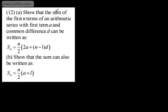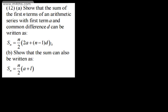So let's go ahead and start. In question 12, part a, we're asked to show that the sum of the first n terms of an arithmetic series with first term a and common difference d can be written as S_n equals n over 2 times (2a plus (n minus 1)d).